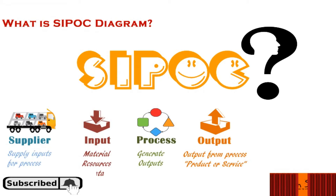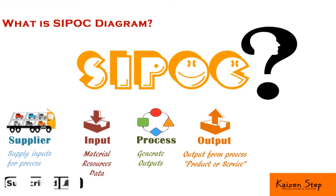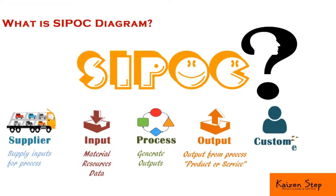The last letter in the SIPOC abbreviation is C, which stands for Customer. The customer is the person or organization that receives the outputs of your process. Note that every output should have a customer.